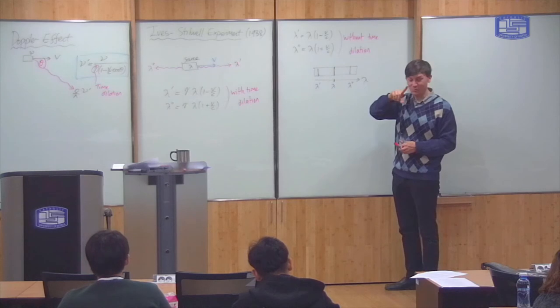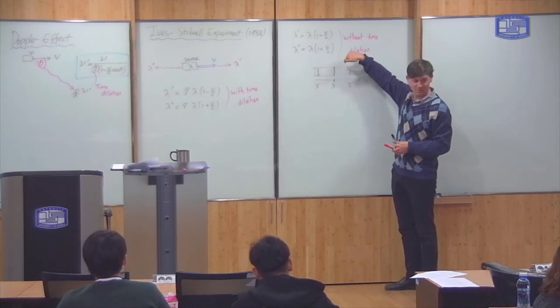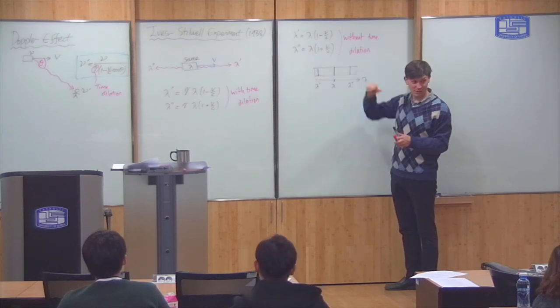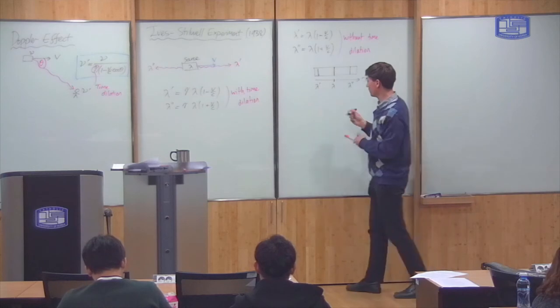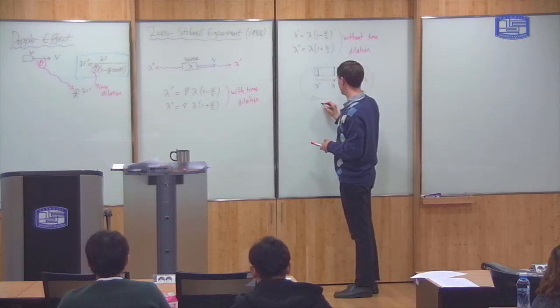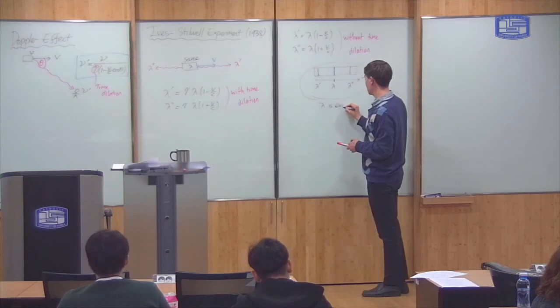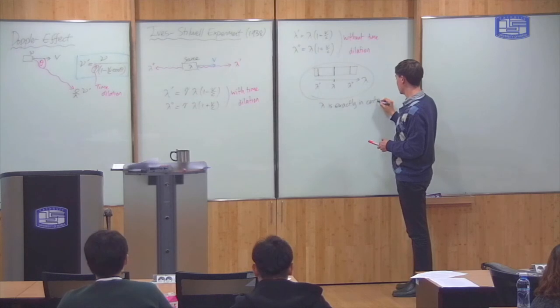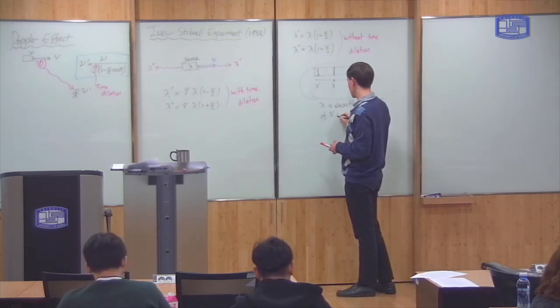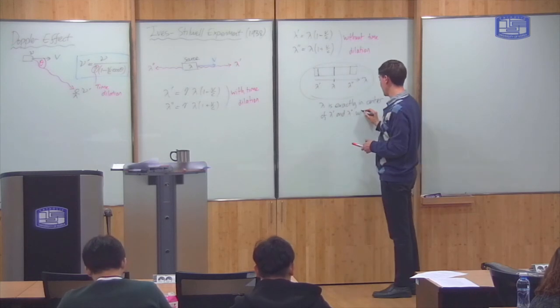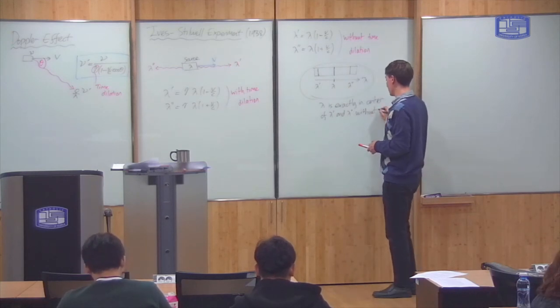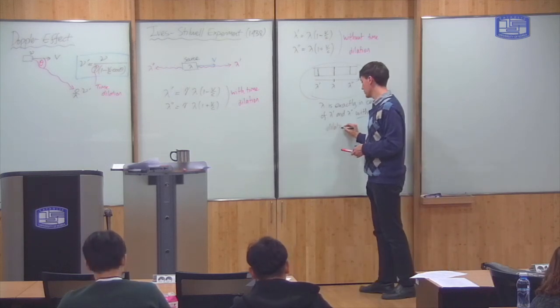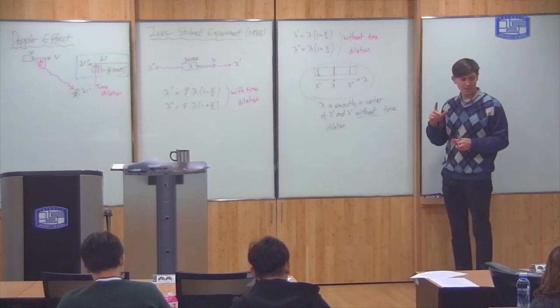And this is the critical part, lambda is exactly in the middle. This is minus b over c, this is plus b over c. So lambda is exactly in the middle. And that's in the case that there's no time dilation.